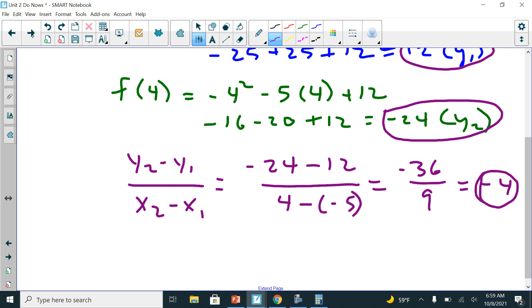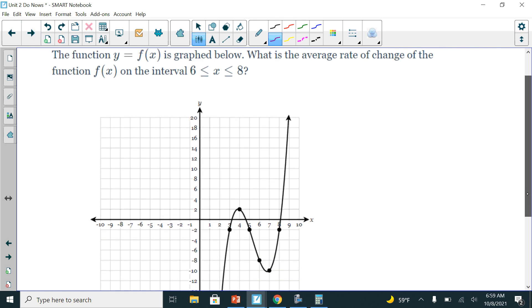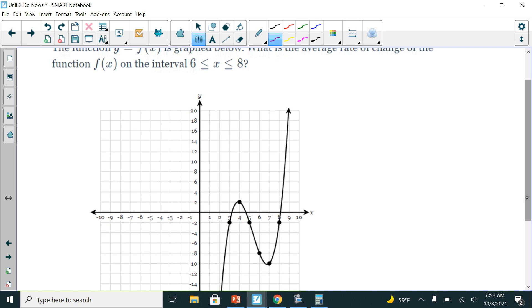All right, last question. So same thing, except now I don't have to do any calculations. I'm only looking from 6 to 8. So here's my 6, here's my 8. So my coordinate for 6, let me just go ahead and erase this so you can see. So at 6, this point is negative 8. So I have 6 comma negative 8.